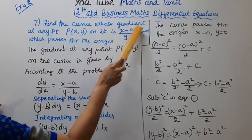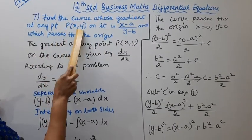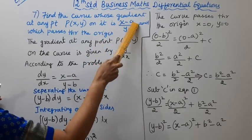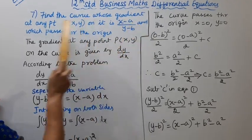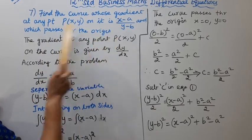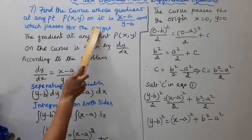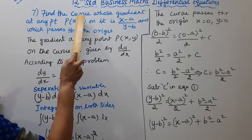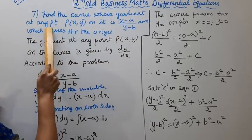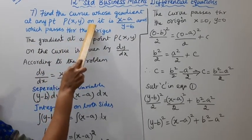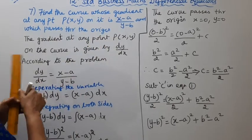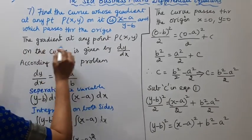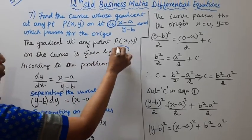Find the curve whose gradient at any point P(x,y) on it is (x-a) by (y-b), and which passes through the origin. First, find the curve whose gradient at any point P(x,y) on it is (x-a) by (y-b).